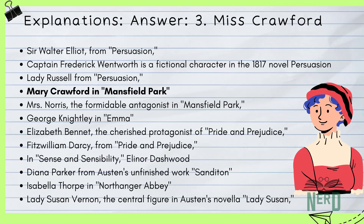Mrs. Norris, from Mansfield Park — if Austen's novels had a villain hall of fame, Mrs. Norris would have her portrait hanging there. She's the aunt from hell, making Fanny Price's life miserable while hoarding money like it's going out of style. She's a lesson in how not to adult, pushing for unhappy marriages and cutting corners at others' expense. George Knightley in Emma is basically the guy everyone loves but doesn't know it yet — kind, considerate, and sees through all the nonsense. Knightley stands out as the gold standard for what Austen considers the ideal man: genuine, caring, and with a no-BS attitude towards life and love.